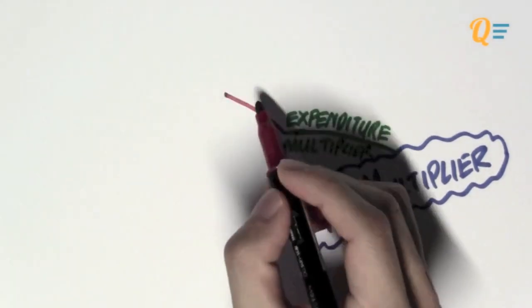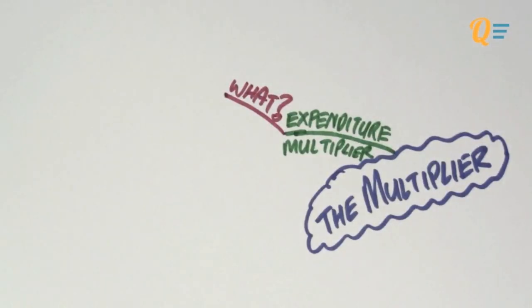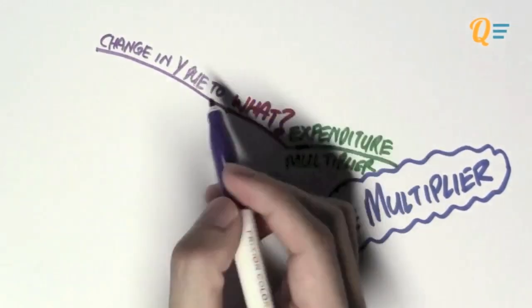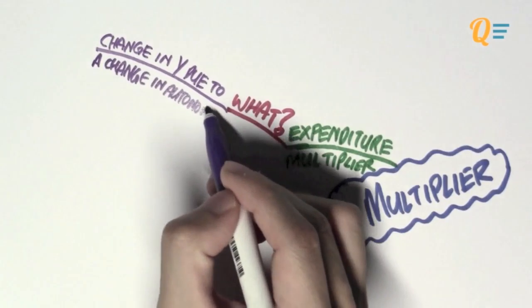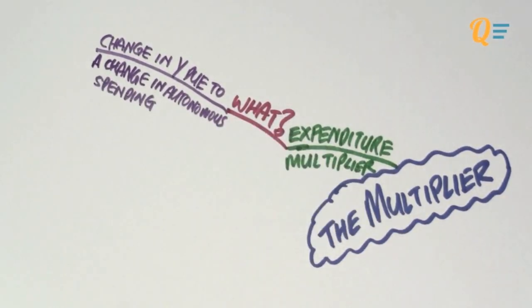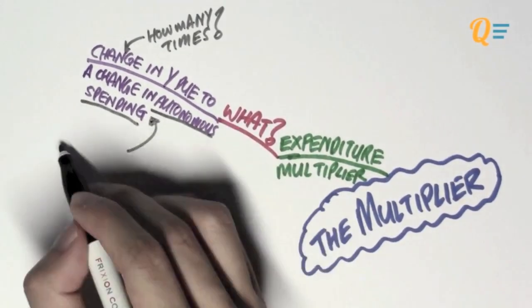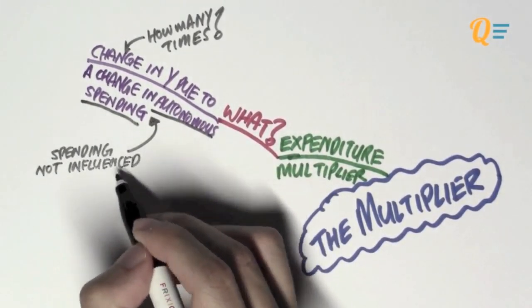So, what is the expenditure multiplier? Well, it is basically the change in output or GDP due to a change in autonomous spending. Now, change here refers to how many times is Y going to change. And autonomous spending refers to the spending that is not influenced by the income level at all.